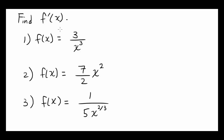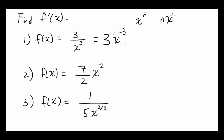Let's try to find the derivatives of these functions. The first one, f of x is 3 over x cubed. That's the same thing as 3 times x to the negative third power. The reason I want to write it in this form is because if you have x to some power, it's easier to differentiate. You can bring this n down and subtract 1 from the n to find the derivative.